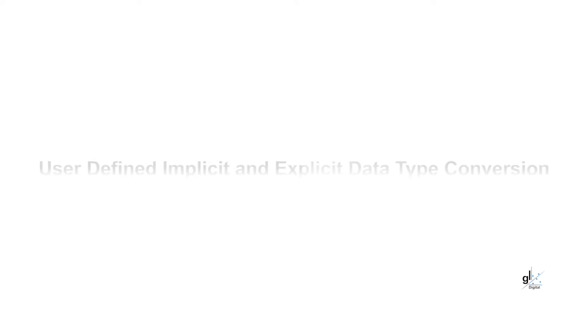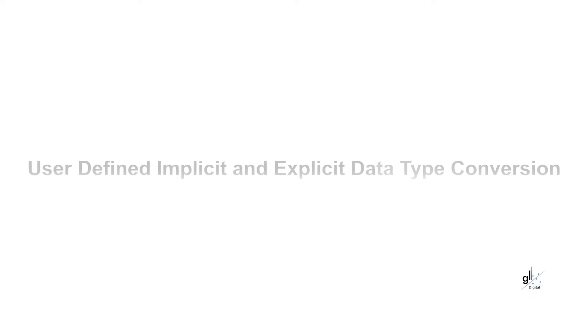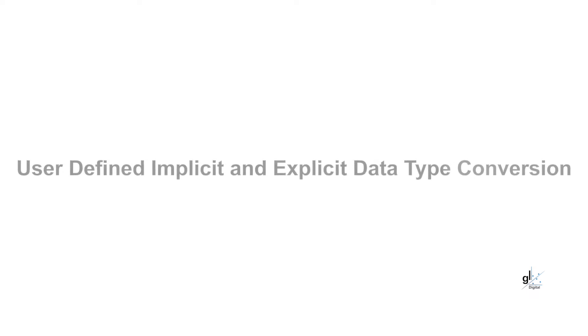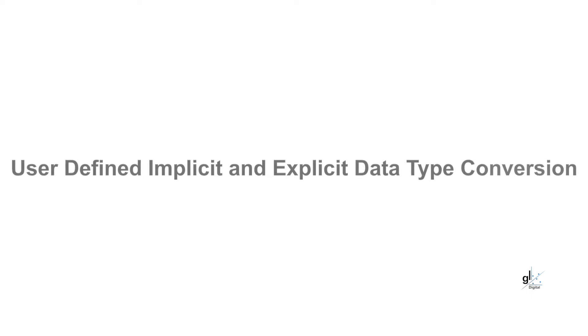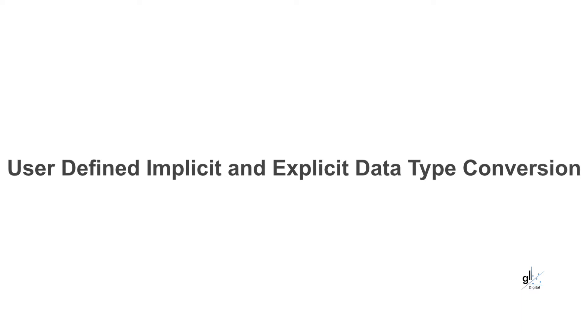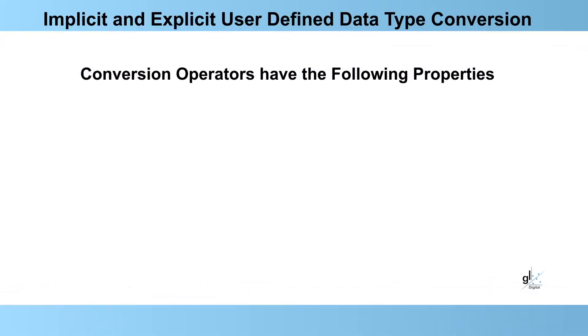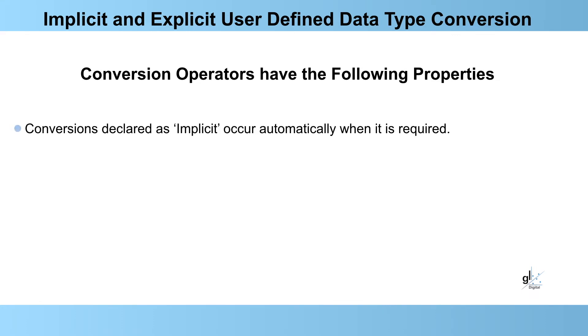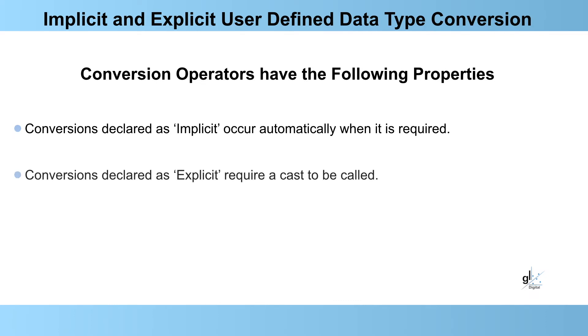I want to demonstrate how a developer can create custom data type conversions both explicitly and implicitly. This topic is perhaps a bit advanced for a beginner's course, but the example we are about to create will highlight that the developer is not limited to the built-in data type conversion operations provided by C#. Although structs and classes have not yet been fully explored, we will use a struct to demonstrate user-defined type conversion. Conversion operators must be declared as static; implicit conversions occur automatically, while explicit conversions require a cast.